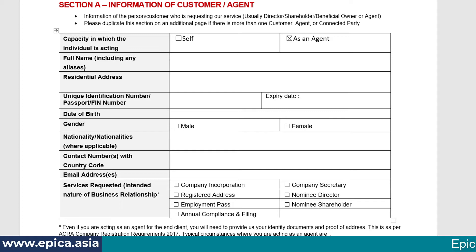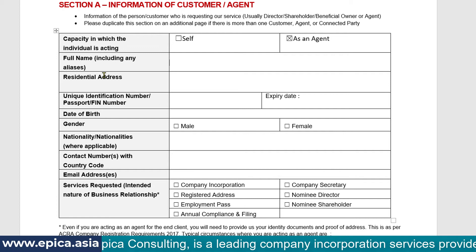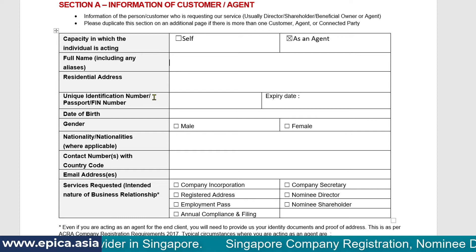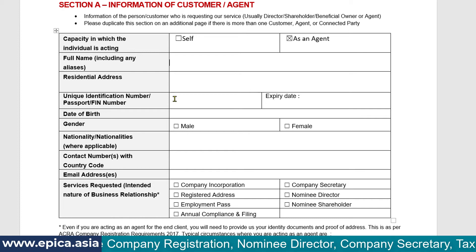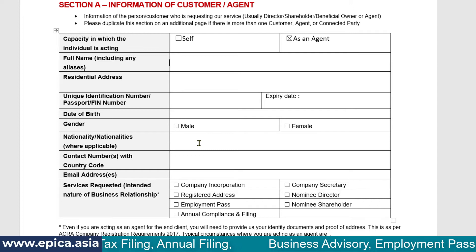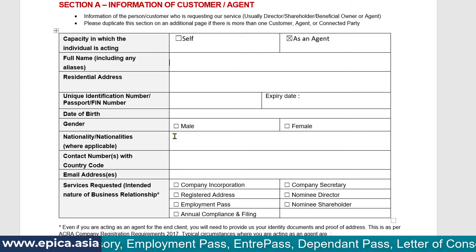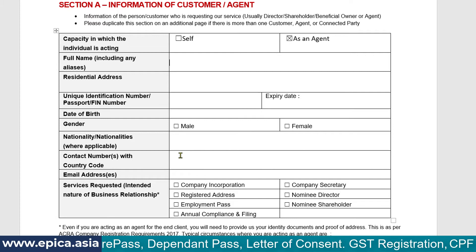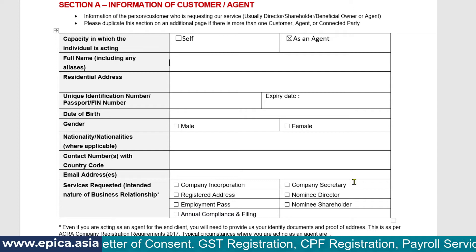Even if you are an agent, your details are required as per ACRA regulations. The required details are quite straightforward: your full name as it appears in the passport including any aliases, your residential address as it appears on your proof of address, your unique identification number — passport number or foreign identification number. Normally we rely on passport number for foreigners and NRIC for Singaporeans — along with the expiry date, your date of birth, your gender, all your nationalities, your contact number with country code, and your email address.